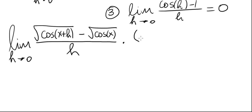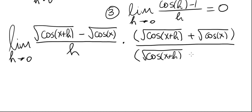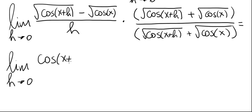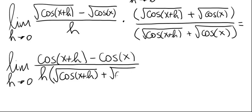The first step is to multiply both the numerator and the denominator by the conjugate of the numerator, which is the square root of cosine of (x+h) plus the square root of cosine of x. Multiplying these out, the numerator no longer has a radical. This gives the limit as h approaches zero of cosine of (x+h) minus cosine of x, divided by h times the square root of cosine of (x+h) plus the square root of cosine of x.